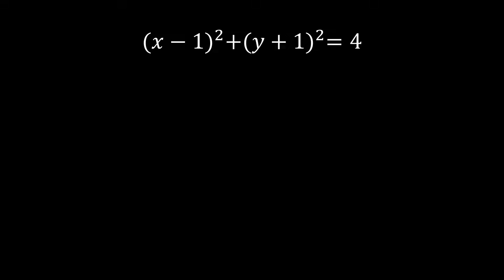All we have to do is expand your (x minus 1) squared and your (y plus 1) squared, then do the math, combine every like terms, and always have the right side equal to 0. That will be your general form.